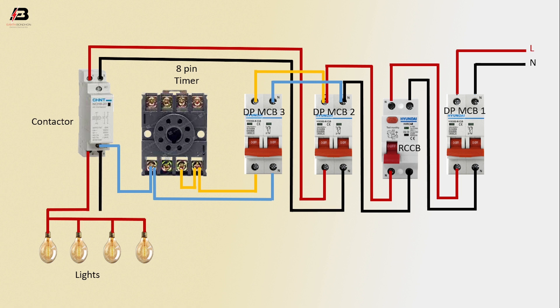3, and 4. Neutral connection output from contactor to connect lights 1, 2, 3, and 4. Output connection from contactor coil back to 8-pin timer.